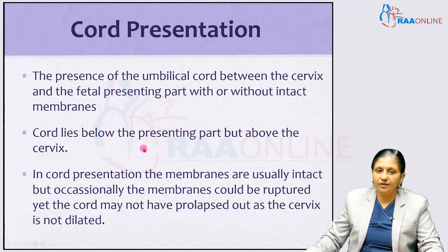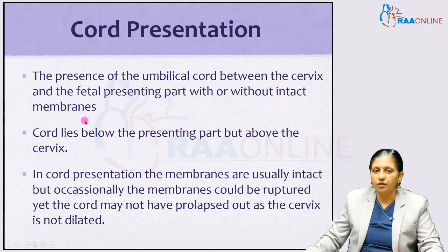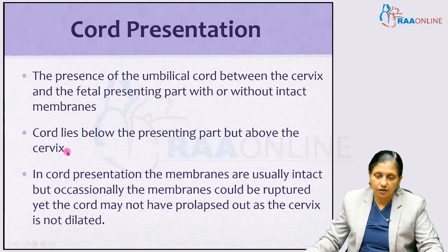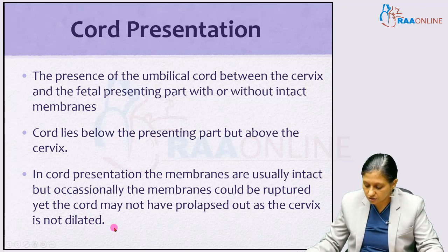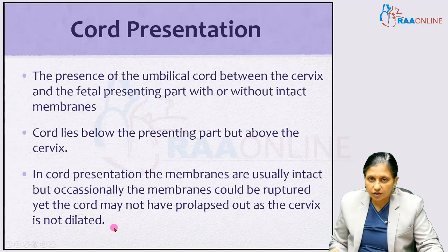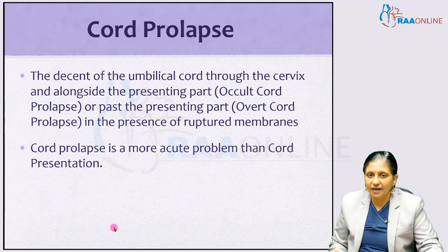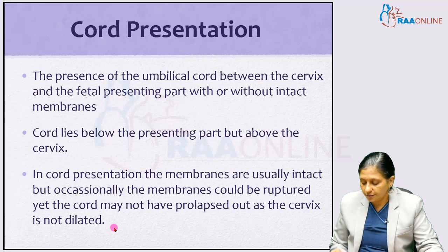The presence of the umbilical cord between the cervix and the fetal presenting part, with or without intact membranes, is called cord presentation. Cord presentation occurs when the cord lies between the presenting part but above the cervix — this is called the hidden cord. In cord presentations the membranes are usually intact, but occasionally they may be ruptured and yet the cord has not prolapsed because the cervix is not dilated. If the membranes are ruptured it is called cord prolapse; if the membranes are not ruptured it is called cord presentation.